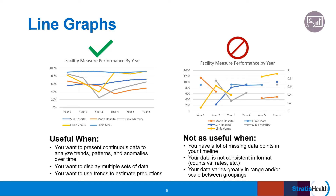The line graph on the left shows measure performance as a percentage for five facilities over six years. This graph is successful in presenting continuous data to analyze trends, patterns, and anomalies over time, and displays trends that can be used to make educated guesses about future performance. The line graph on the right also shows measure performance for five facilities over six years, but shows a count on the left vertical axis and a rate on the right vertical axis. This graph is not successful because there are many missing data points, the data is not in a consistent format, and having both rates and counts on separate axes makes it impossible to interpret the value of each data point.